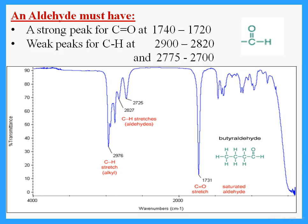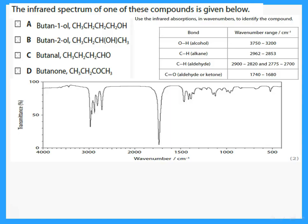An aldehyde has a C=O, but before 3000 it doesn't have a peak at 3300 — so there's no OH. However, there are small peaks at around 2800 to 2900 which indicate the CH next to the C=O. These weak peaks indicate the presence of an aldehyde, in addition to the peak for the C=O.